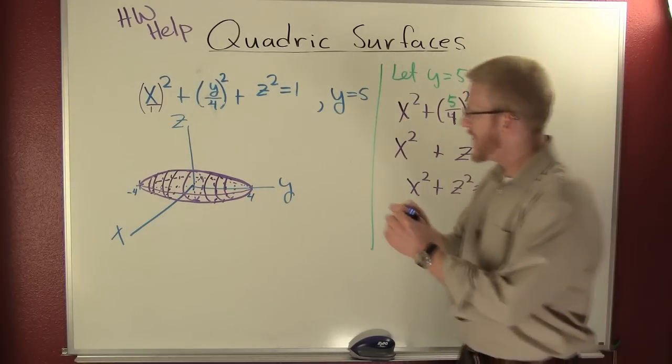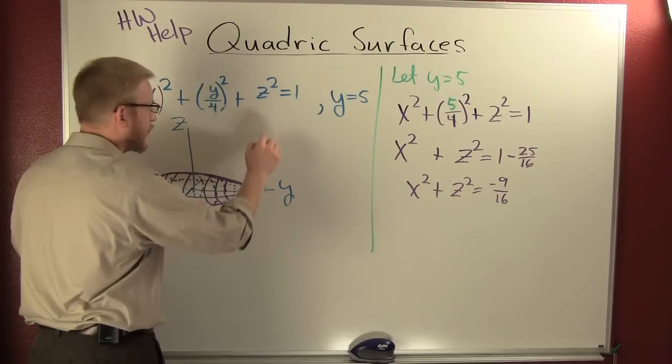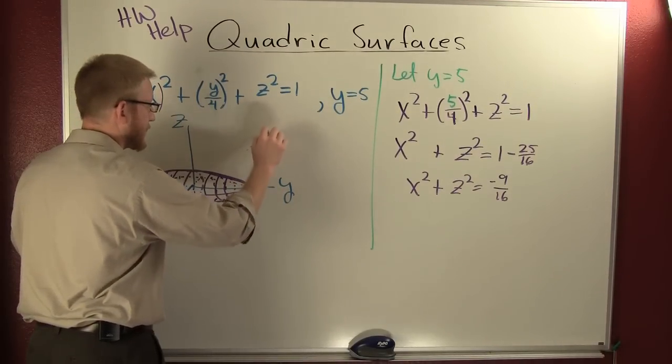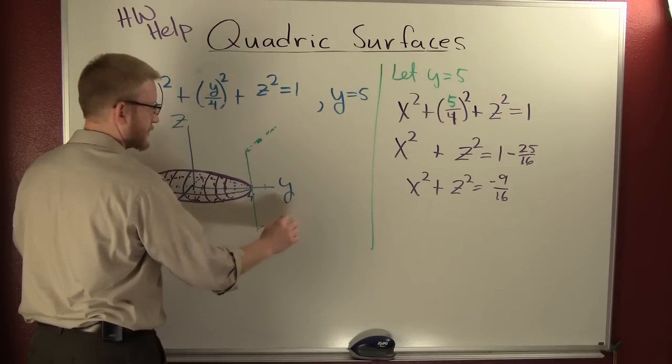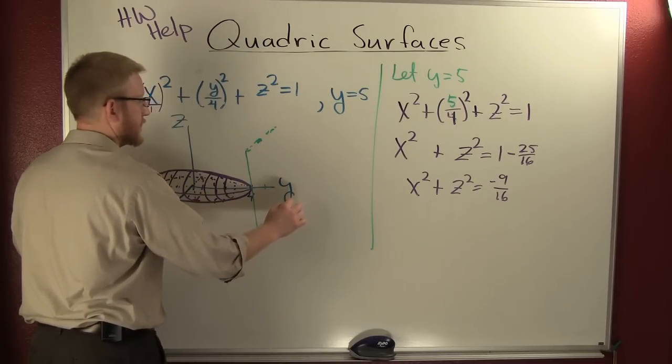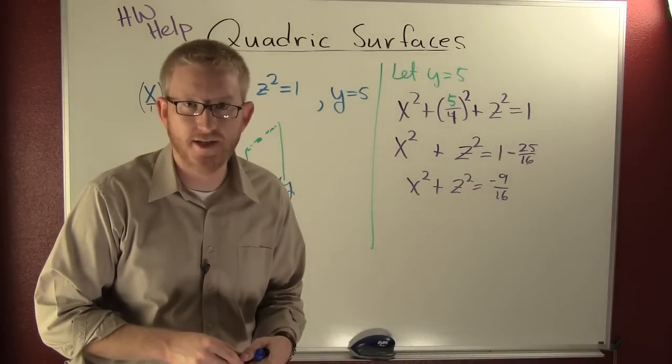So when we look at the intersection of this ellipsoid and the plane y is equal to five, we see they don't intersect.